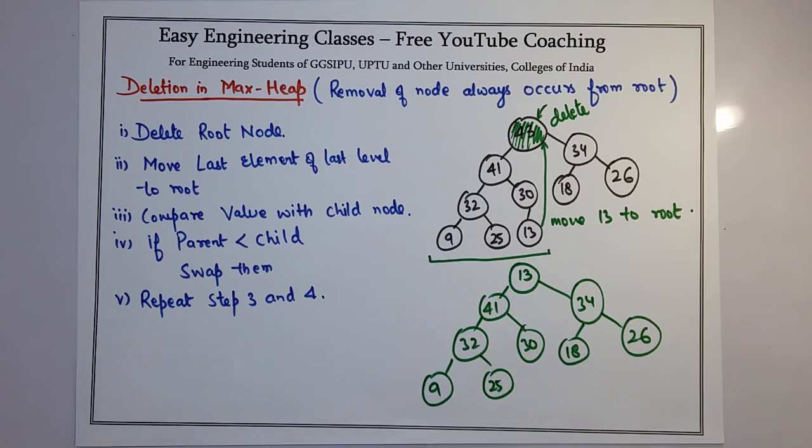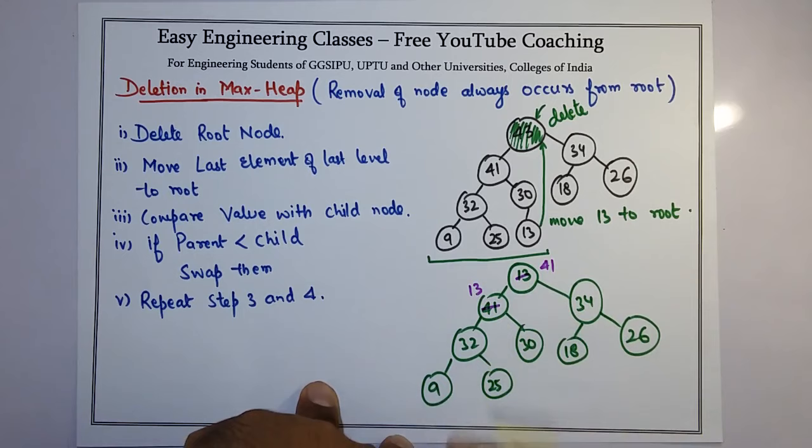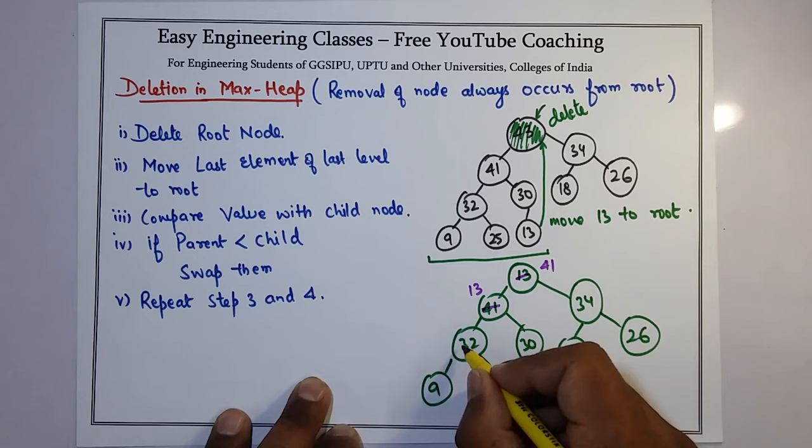We need swapping, so it will become 41 and it will become 13. Again, we check this with that. We need swapping, so this will become 13 and this will become 32.